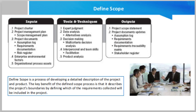The project charter elements include: project purpose, high-level requirements, overall project risk, measurable project objectives and related success criteria, high-level project description, boundaries and key deliverables, summary milestone schedule, pre-approved financial resources, key stakeholder list, project approval requirements covering what constitutes success and who decides, project exit criteria covering conditions to close or cancel the project or phase, assigned project manager responsibility and authority level, and the name and authority of the sponsor or another person authorizing the project charter.